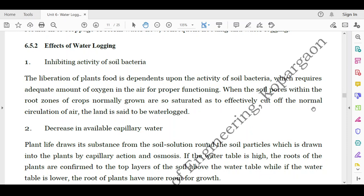There are a number of bacteria present in the root zone. As of now, you might have studied Azotobacter and there are a number of bacteria, Nitrosomonas bacteria which liberates nitrogen, which converts the air nitrogen into the nitrogen which is consumable by the plant. And all these bacteria help the plant to grow to get their nutrients. If the activity of these bacteria is affected, then ultimately it will have the effect on the productivity yield of the crop. So when the soil pores within the root zone of crop normally grown are so saturated as to effectively cut off the normal circulation of air, the land is said to be waterlogged.